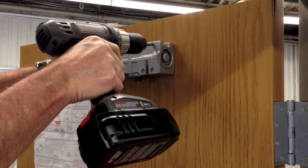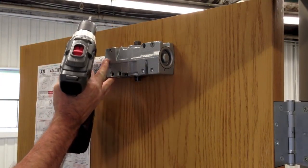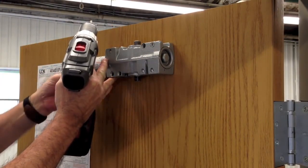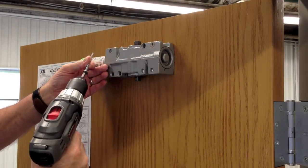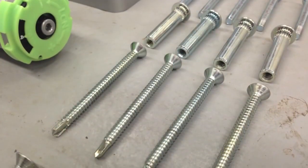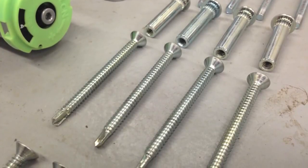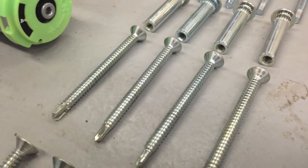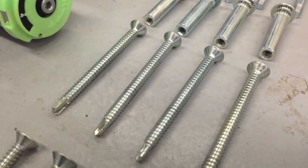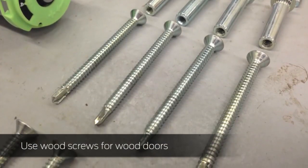Attach the closer to the door using the four screws. Self-reaming, self-tapping screws are provided as standard. Depending on your application, your supplier may have also provided wood screws or through bolts and machine screws. We recommend using wood screws for wood doors.